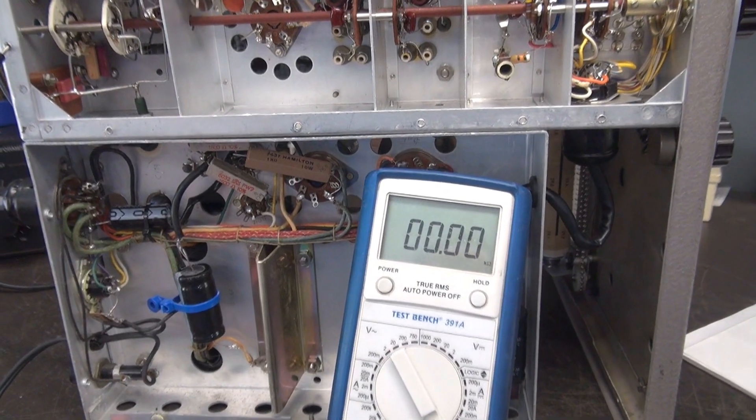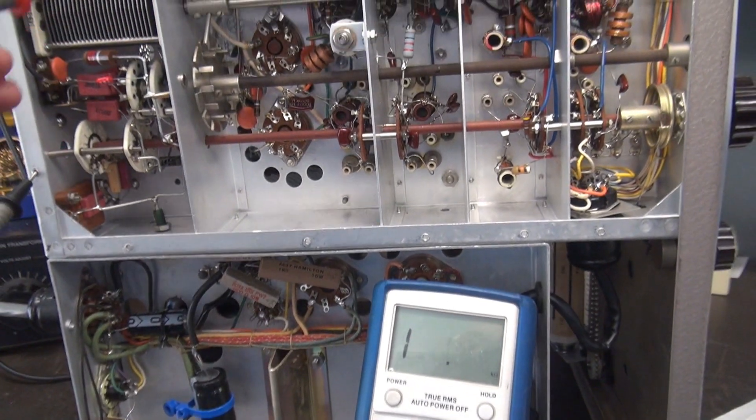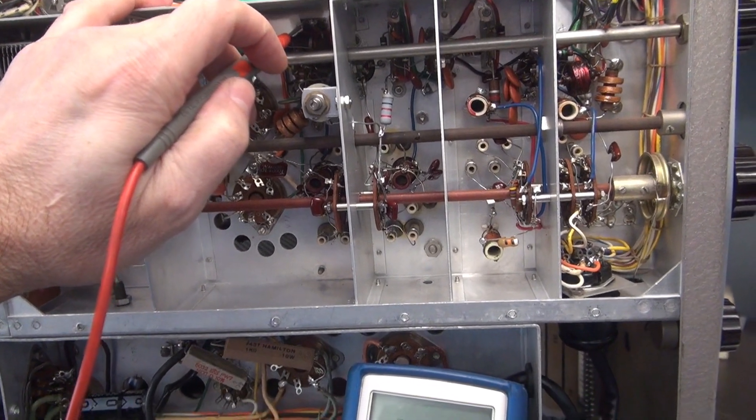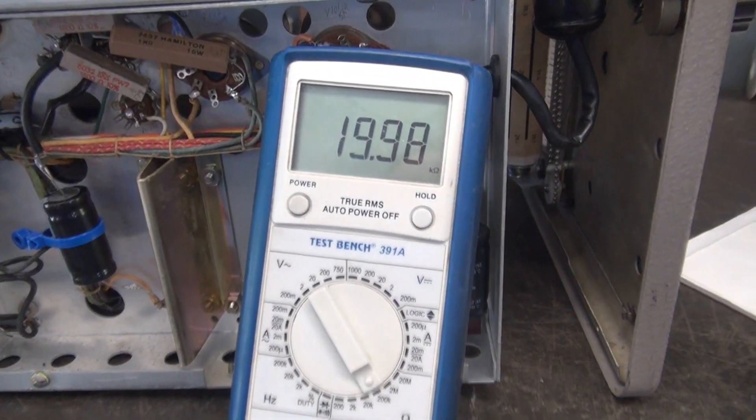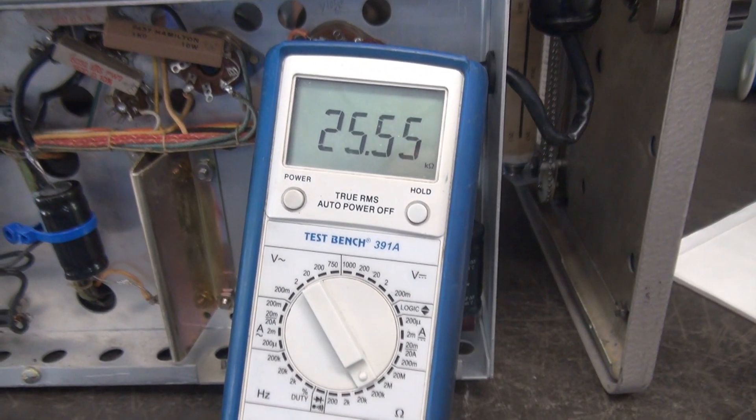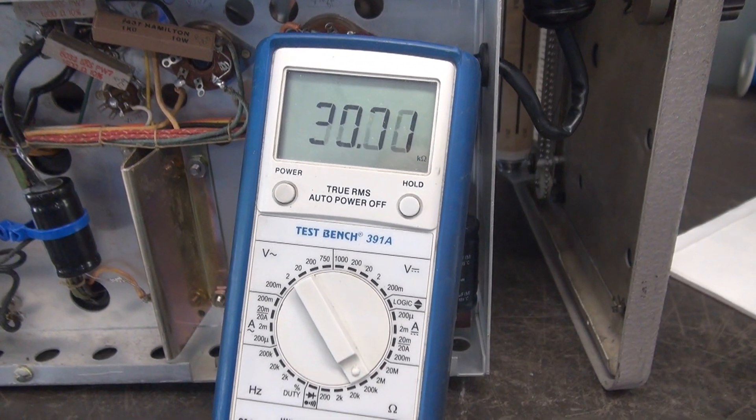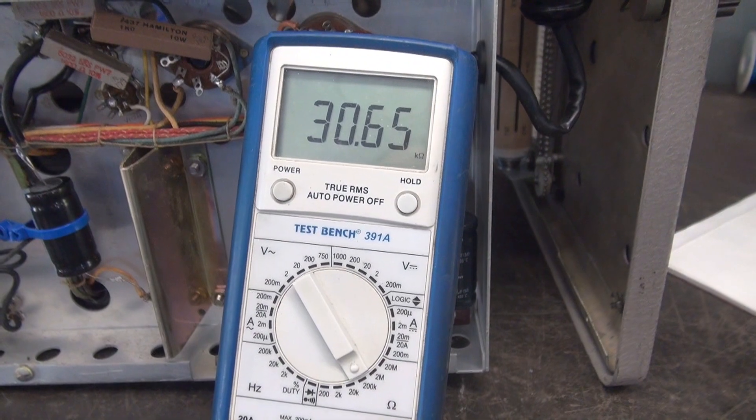Real quick, let me show you the resistance on the other side of the 1K resistor. So this is feeding the plate of the 12BY7. So you're seeing approximately, let's just call it 30K.